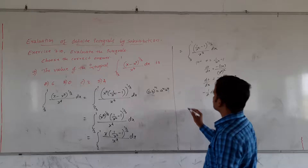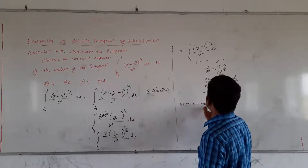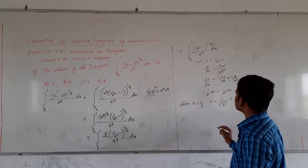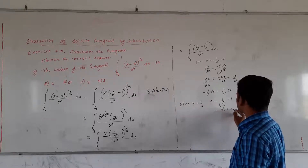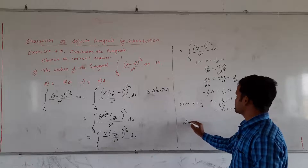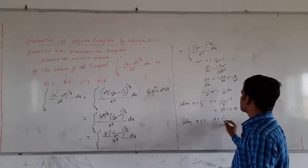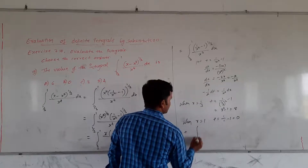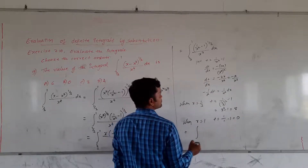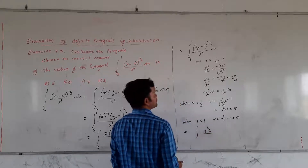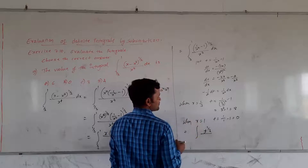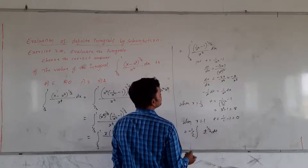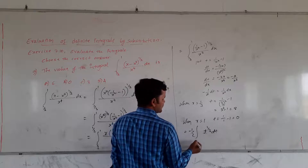Here we have 1/x³ · dx. Moving minus 2 to the left side: minus 1/2 · dt equals 1/x³ · dx. What happens to the upper and lower limits? When x equals 1/3: t equals 1/(1/3)² minus 1 equals 9 minus 1 equals 8. When x equals 1: t equals 1/1² minus 1 equals 1 minus 1 equals 0. So our integral changes from 1/3 to 1, becoming 8 to 0.